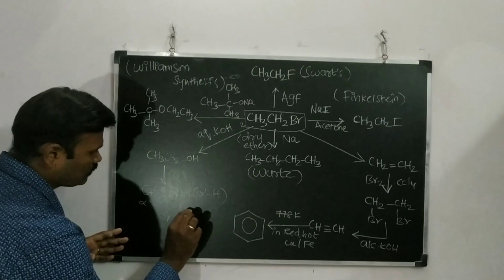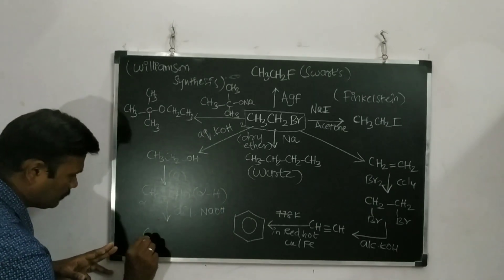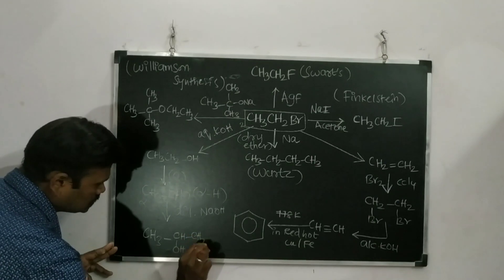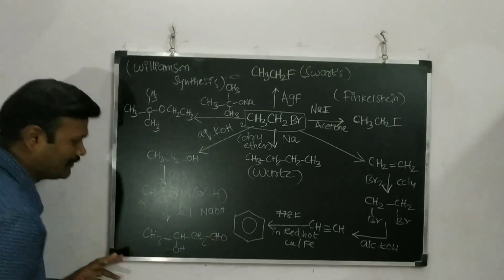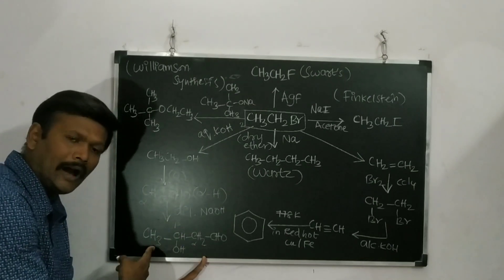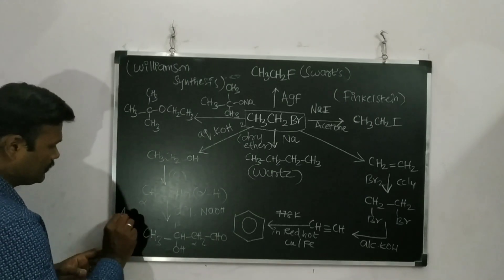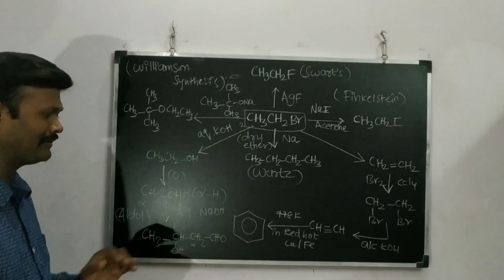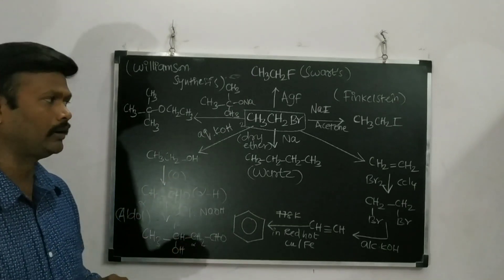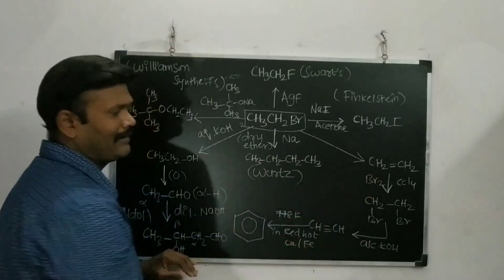Alpha-hydrogen-containing aldehydes typically undergo a specific type of reaction. In the presence of a dilute base, they form a product — for example, CH3CH(OH)CH2CHO, which is beta-hydroxybutanal. This reaction is otherwise called aldol condensation, which plays a very important role in organic chemistry.